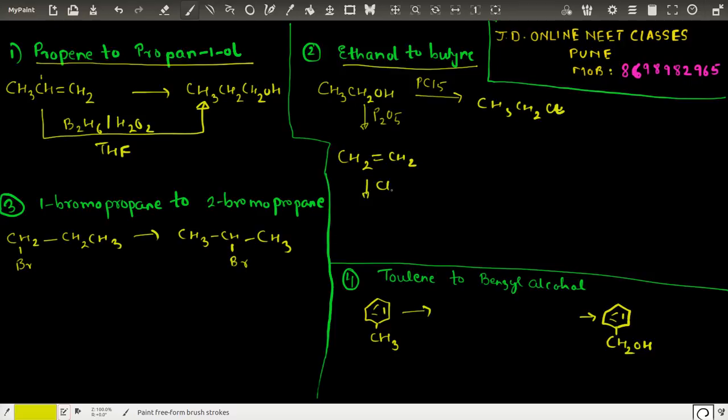Now if we use strong NaNH2, which is a very strong dehydrohalogenating agent, two molecules of HCl will be removed. This would give us HC≡CH. If we use a slight excess of NaNH2, we'll get a sodium salt: HC≡C⁻ Na⁺.